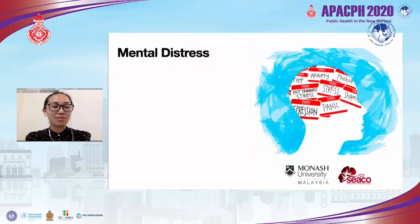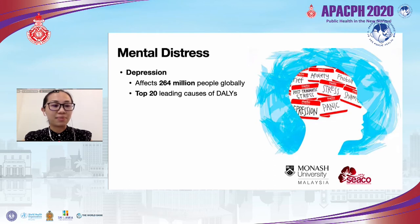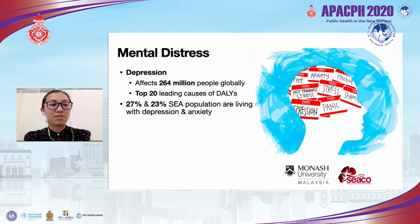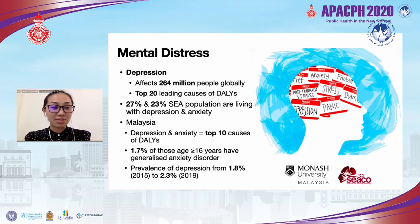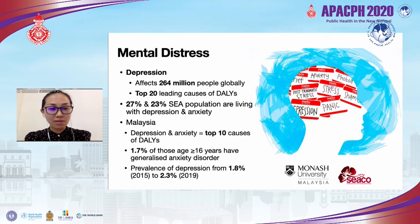Let's look at some statistics related to mental distress. Globally, depression affects 264 million people and is one of the top 20 leading causes of Disability Adjusted Life Years, or DALYs. In Southeast Asia, 27% of people are living with depression and 23% with anxiety. In Malaysia, depression and anxiety are among the top 10 causes of DALYs. Among those 16 years and above, 1.7% have generalized anxiety disorder, and the prevalence of depression increased from 1.8% in 2015 to 2.3% in 2019.